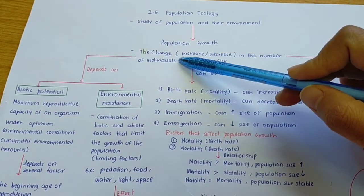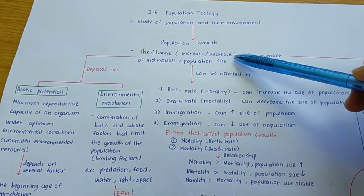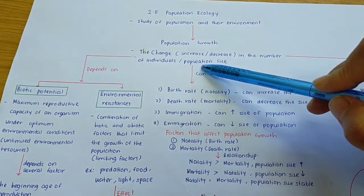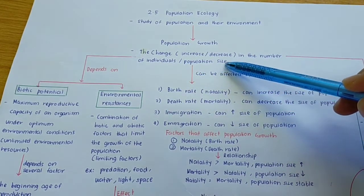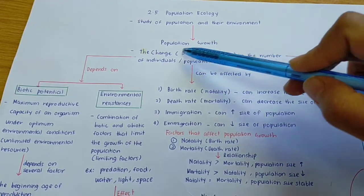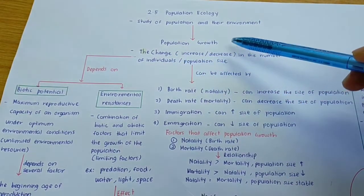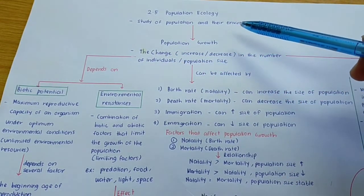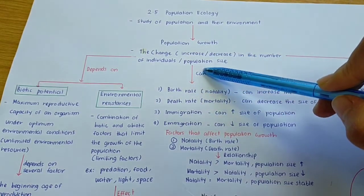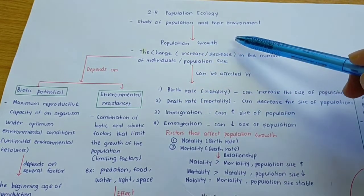Population growth is the change — which is increased or decreased — in the number of individuals or population size. So we look at the changes: either the population size or the number of individuals are increased or decreased.